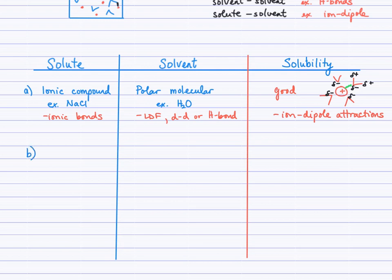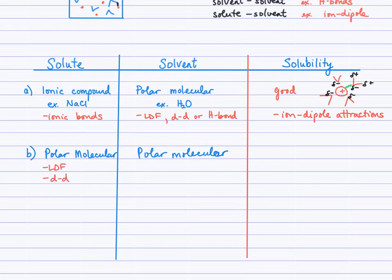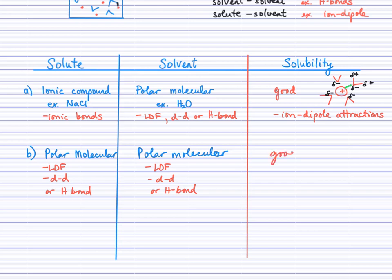What other combination could we have? What about a polar molecular solute in a polar molecular solvent? What types of interactions do polar molecules experience? Well, they've definitely got London dispersion forces and dipole-dipole attractions, possibly even hydrogen bonding. Solvents that are also polar molecules will have London forces, dipole-dipole, and even hydrogen bonding. We tend to find polar molecules of solutes dissolve well in polar solvents because they're able to interact with each other through those dipole-dipole or even hydrogen bonding interactions.